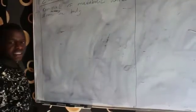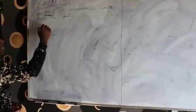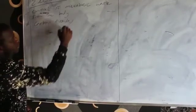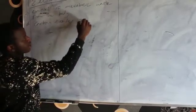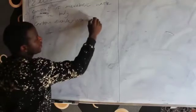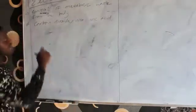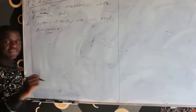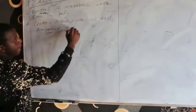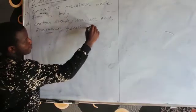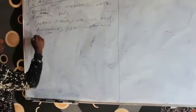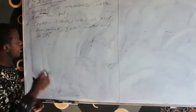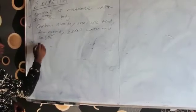In these metabolic wastes, examples include: carbon dioxide, urea, uric acid, ammonia, and excess water and salts. The system that is responsible for excretion in the body is the excretory system.